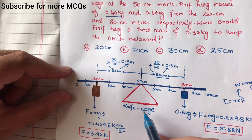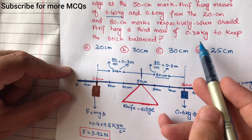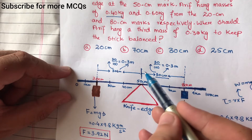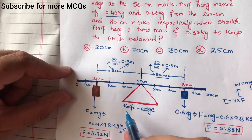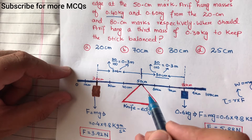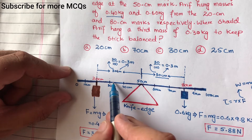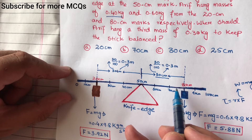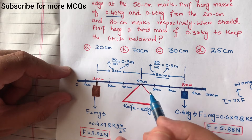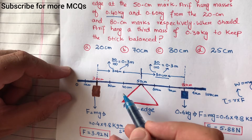اب question یہ کہہ رہا ہے کہ ہم third mass کہاں پر attach کریں کہ یہ rod equilibrium میں آ جائے۔ تو سب سے پہلے ہم نے معلوم کرنا ہے کہ ہم اس mass کو knife edge کے left side پر attach کریں یا right side پر۔ یہ معلوم کرنے کے لیے ہم clockwise torque اور anti-clockwise torque معلوم کریں گے۔